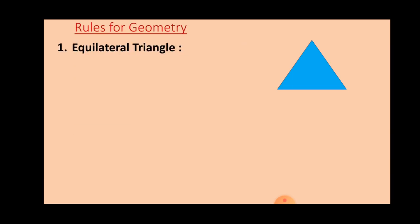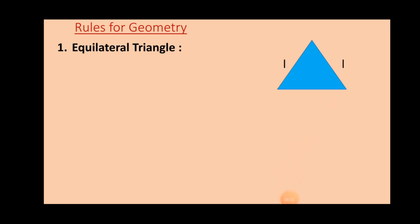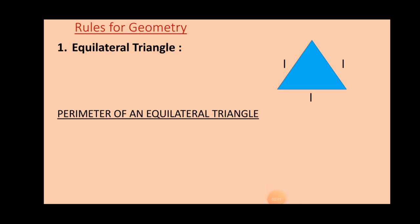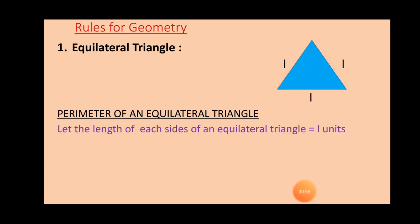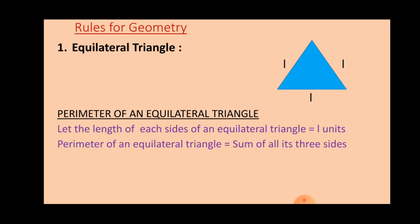Here come the rules for geometry, where we will discuss first of all about the equilateral triangle. Look at this figure which represents an equilateral triangle. It has all three sides of equal measure. We will represent each side by taking a length of L units. Now let's discuss regarding the perimeter of an equilateral triangle, which defines the total distance or total length for any given figure.